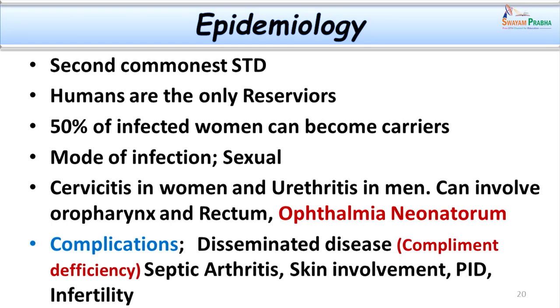Complications can result and they are very well known. Not only local regions can be involved, but disseminated disease as in case number 2 can be present. This usually happens when people are suffering from complement deficiencies. They can sometimes even present as gonococcal septicemia. Septic arthritis, skin involvement, and pelvic inflammatory diseases are well-known complications. Especially in women, salpingitis, bartholinitis, and cervicitis are common.